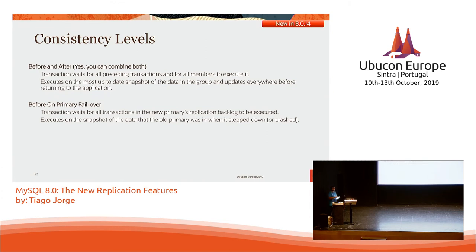You can combine both. You can also handle primary failover consistency — guaranteeing that when the new secondary node takes over, it will take over with the freshest data, meaning every node is on the same state with the same data. We created what we call 'before' consistency, which waits for all preceding transactions to complete before reading; and 'after' consistency, in which we wait for the transaction to synchronize across the group.